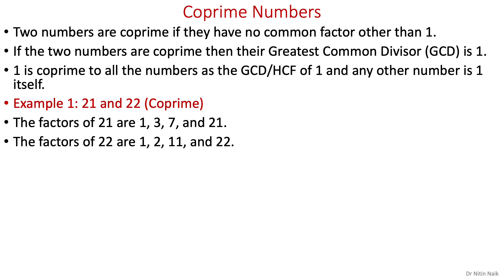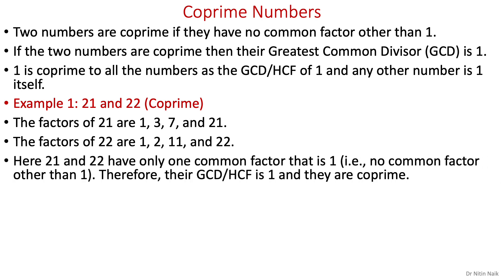they are 1, 2, 11, and 22. Because 21 and 22 have no common factors other than 1, their GCD is 1 and therefore they are co-prime.